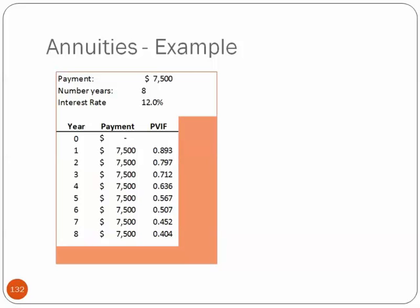The next term is the present value interest factor. And this one is going to change. This 0.893 is going to be one divided by one plus the interest rate to the first. In this case, it's one divided by 1.12 raised to the first.